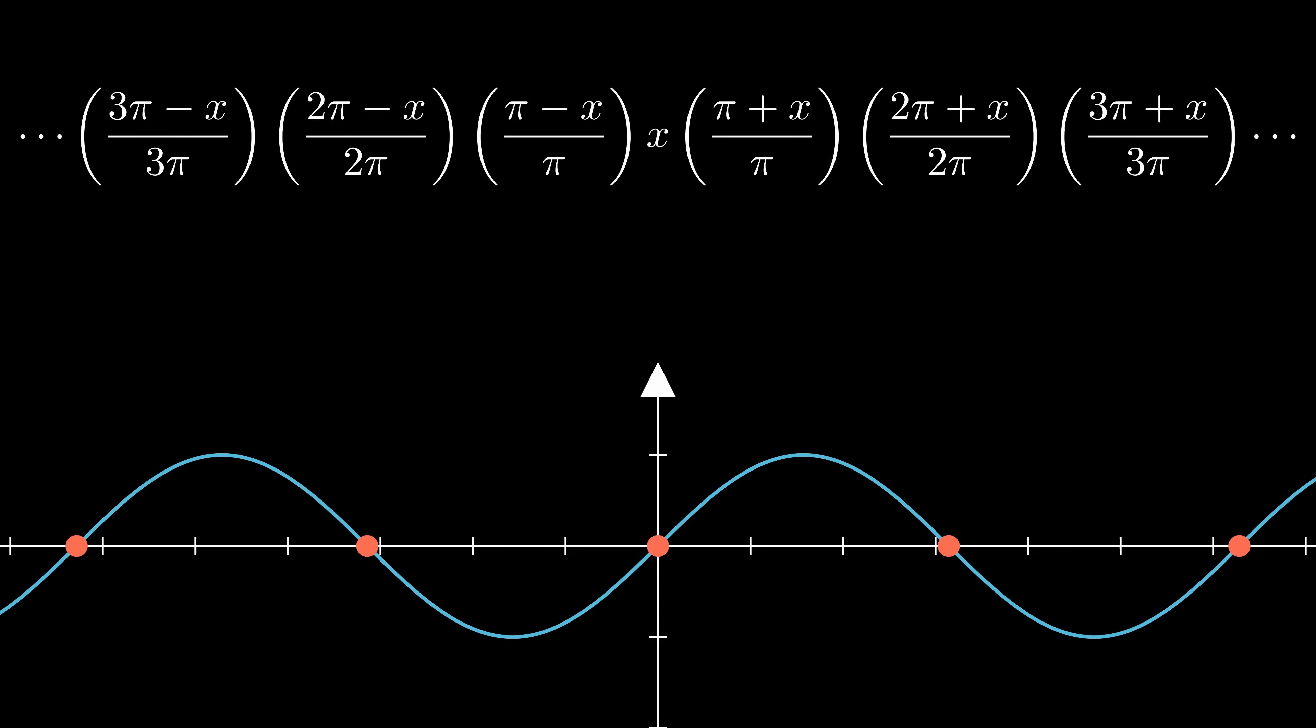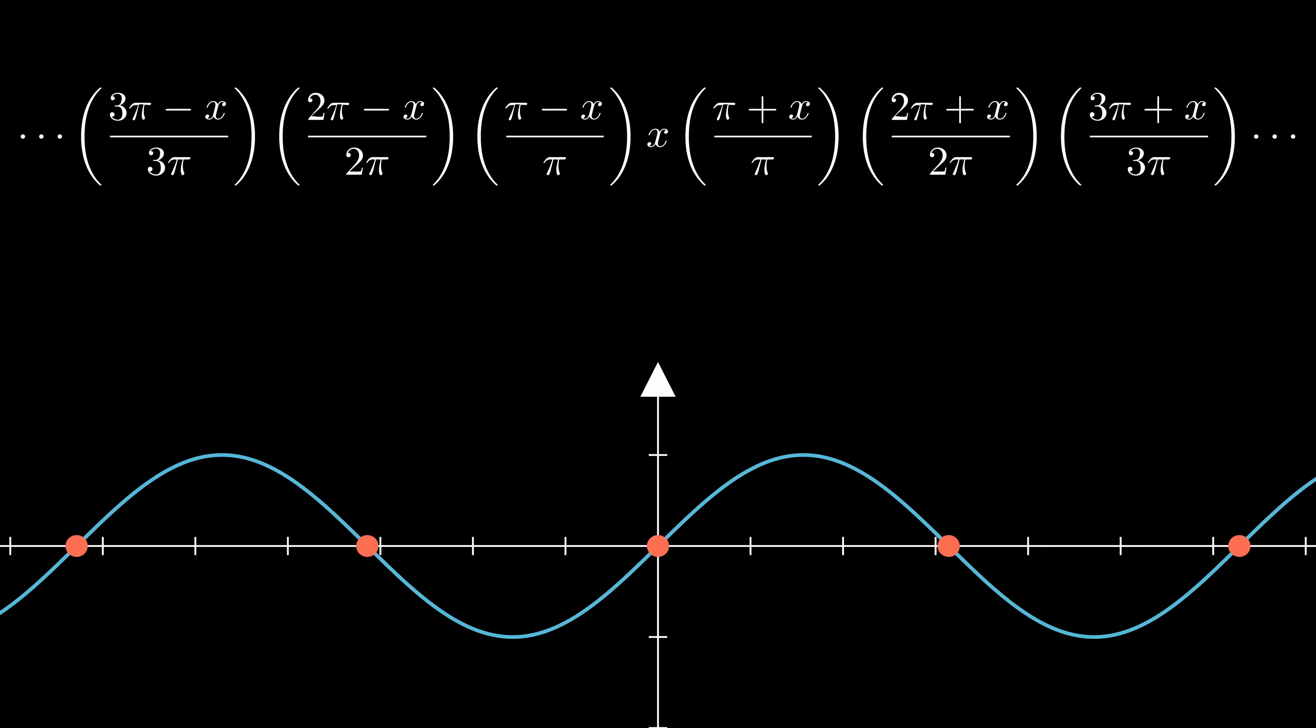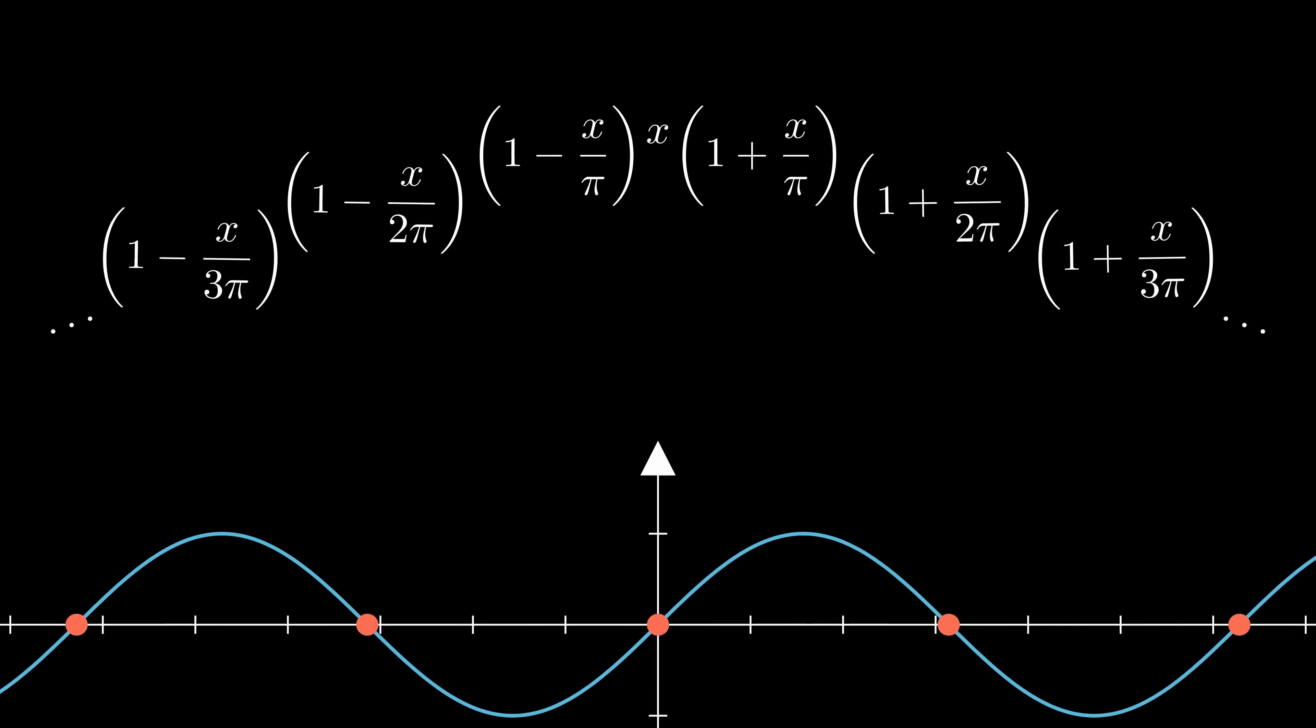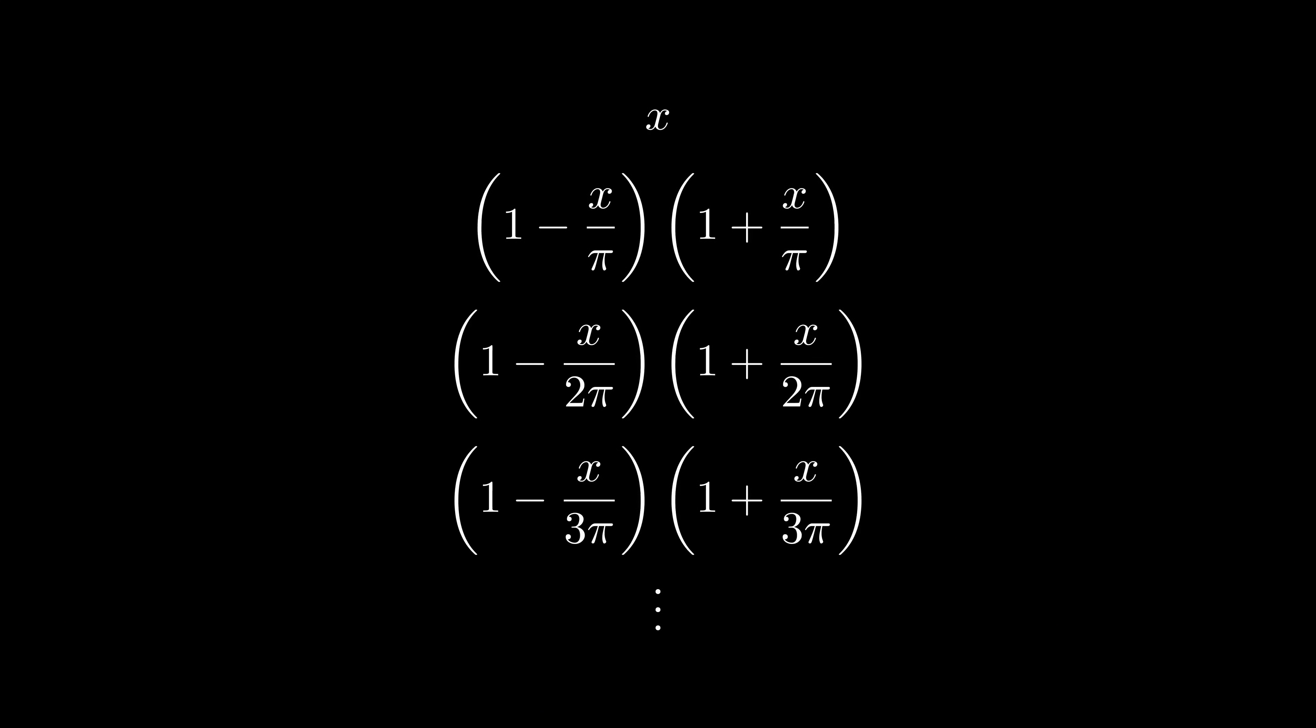And that's all there is to it. The only work left is to wrap this up into a nice, compressed, unambiguous formula with product notation. First, we can split up all of the fractions and write them like this, which is arguably cleaner. Then, we can pair up all of the binomials like this, matching each positive zero with its negative counterpart.